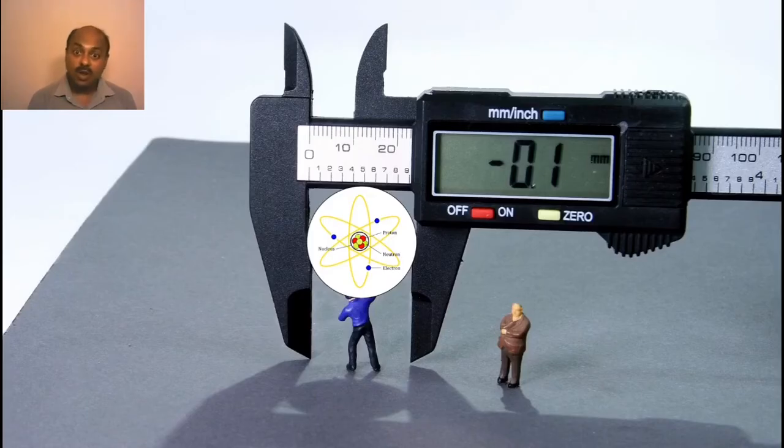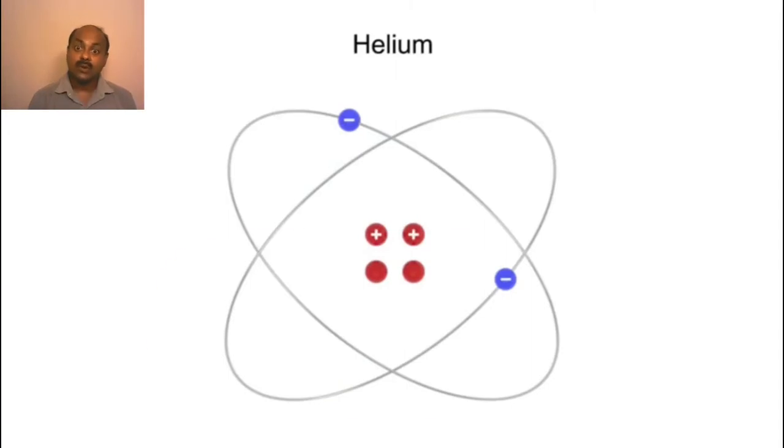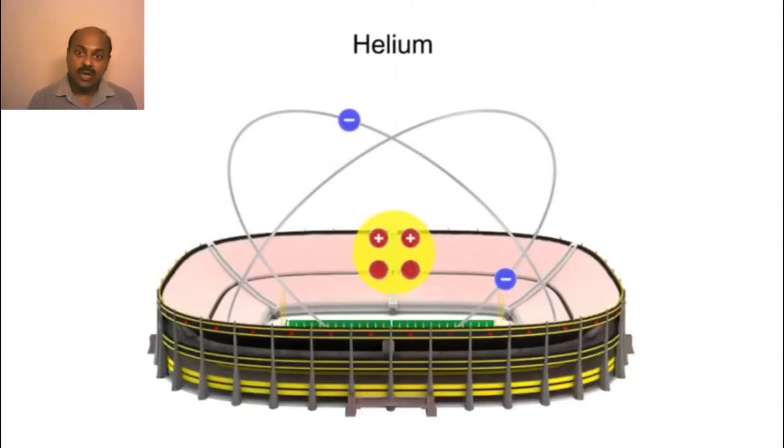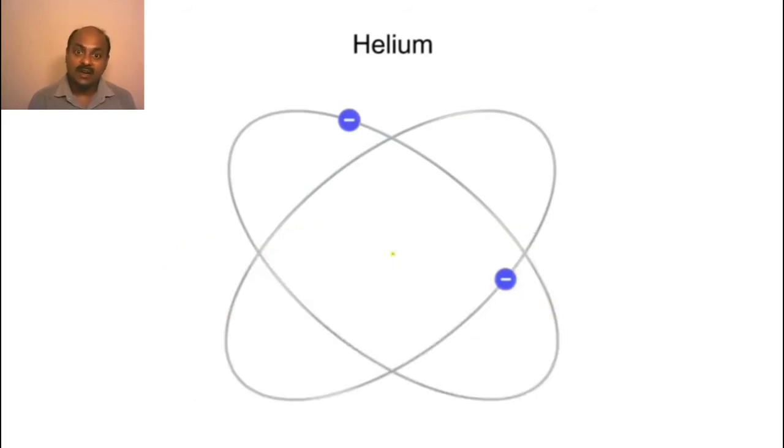If the atom is so small, how small would be the nucleus? To understand this, you will have to blow up the atom to the size of a football stadium. In which case, the nucleus would be as small as a small marble in the center of the stadium, while the electrons would be orbiting around on the edge of the stadium.